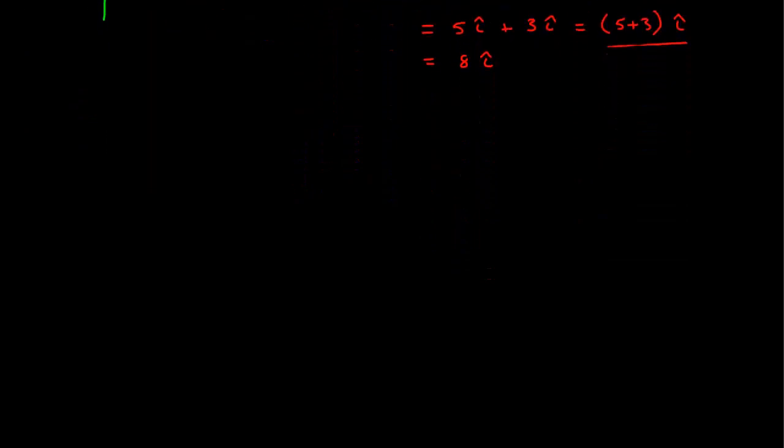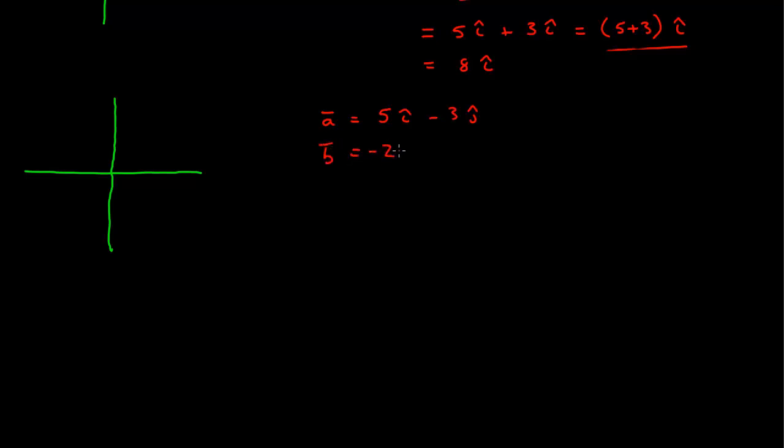So that's pretty easy to see in one dimension, and the same thing can apply in two dimensions as well. So let's look at a more complicated addition problem. Let's say my first vector a is equal to 5 i-hat minus 3 j-hat in component form, and I want to add to that a vector b, which is minus 2 i-hat minus 2 j-hat. And I want to know what is c, which is a plus b?